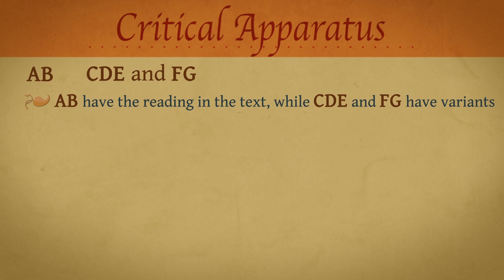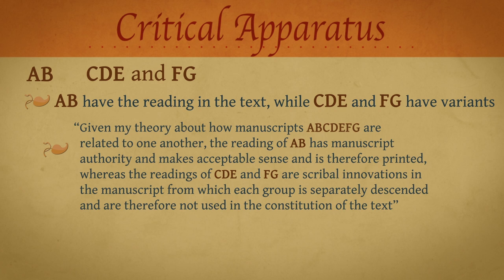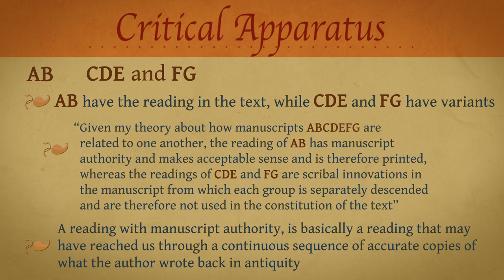In other words, when the editor reports in the apparatus that manuscripts A and B have the reading in the text, while C, D, E, F, and G have variants, what she communicates is likely to be something like this: given my theory about how manuscripts A, B, C, D, E, F, and G are related to one another, the reading of A and B has manuscript authority and makes acceptable sense and is therefore printed, whereas the readings of C, D, E, F, and G are scribal innovations in the manuscript from which each group is separately descended and are therefore not used in the constitution of the text. And beneath that message is a theory that defines what a reading with manuscript authority is — basically, a reading that may have reached us through a continuous sequence of accurate copies of what the author wrote back in antiquity, a reading that may therefore be authentic and by definition right.